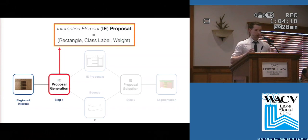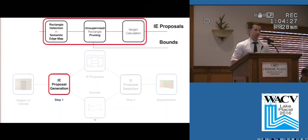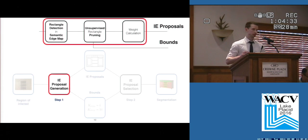The first step computes interaction element proposals. An interaction element proposal is basically a weighted and labeled rectangle. We do this by exhaustively detecting rectangles in a semantic edge map, where semantic edges correspond to the outline of an interaction element. This is computed using random forest.